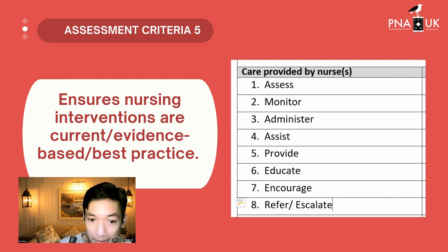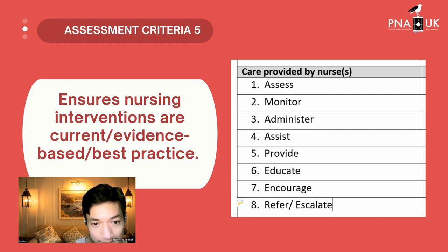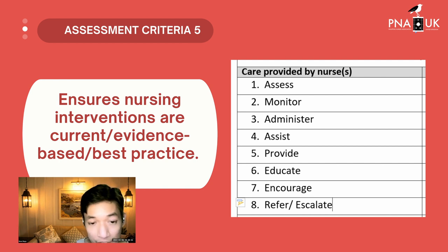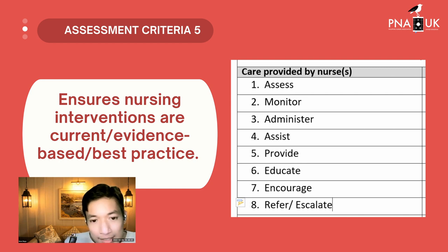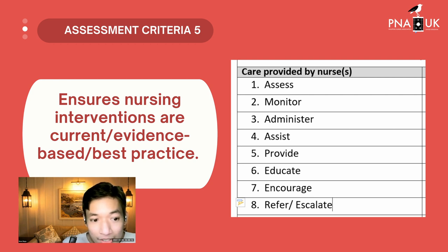When building your care plan interventions, these are useful action words: assess, monitor, administer, assist, provide, educate, encourage, refer, and escalate. These are the keywords commonly used when building interventions. As long as you know these words you will be able to create a solid care plan. For the number of interventions — probably seven or eight would be the best number, especially for the new test of competence where you have a lot of space.